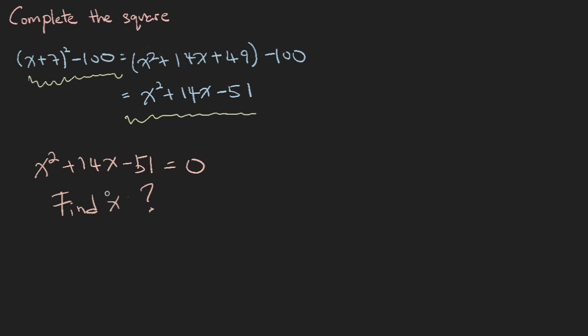If we were to jump the gun a little bit, you can see that this x squared plus 14x minus 51 is equal to this. Therefore, we can write x plus 7 squared minus 100 equals 0, because this is exactly this.